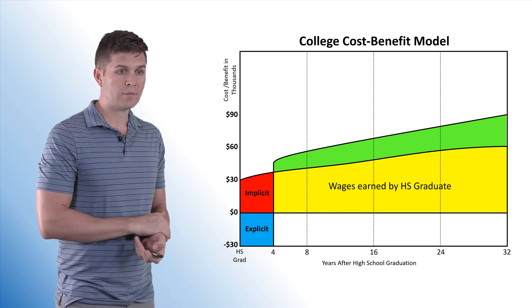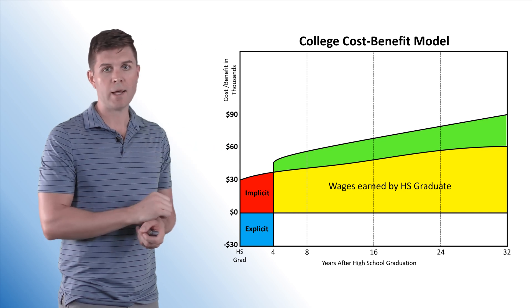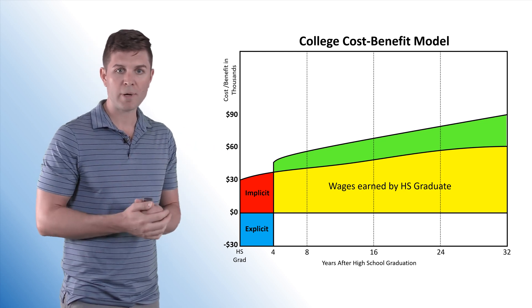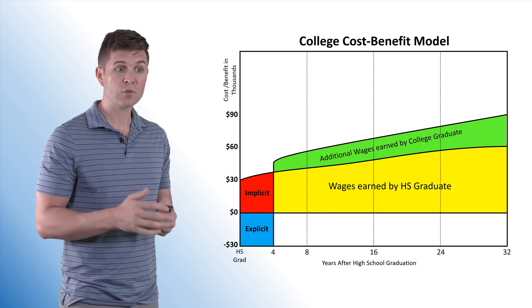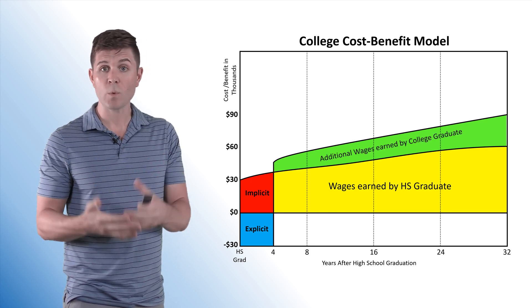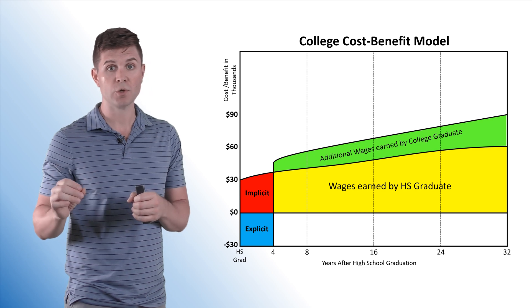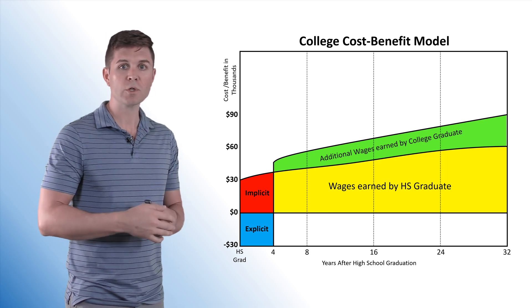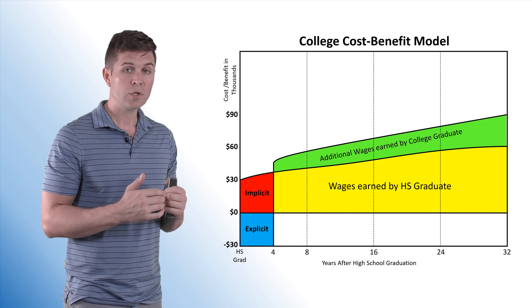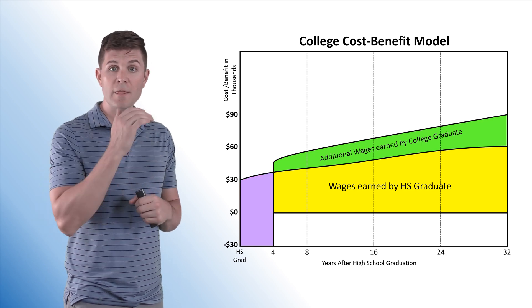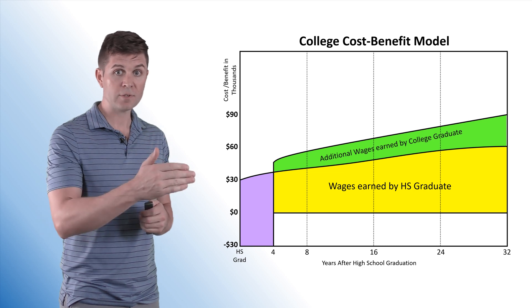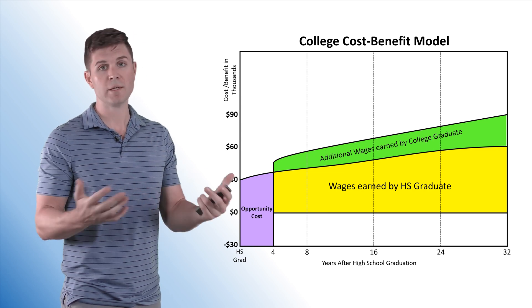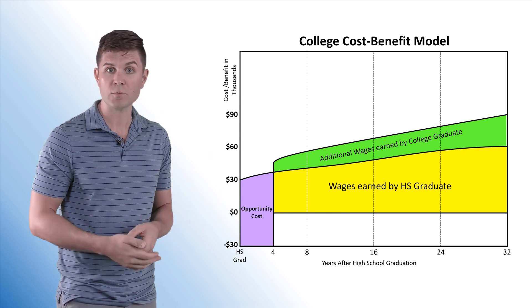Now, the yellow represents, the yellow with the red, represent all the wages earned by the high school graduate. And the green is going to represent the additional wages that the college graduate could earn.